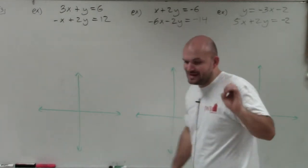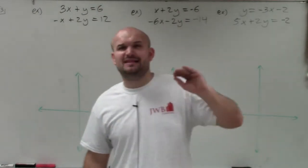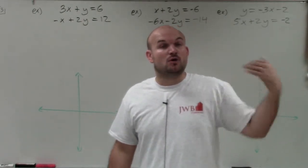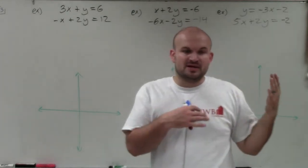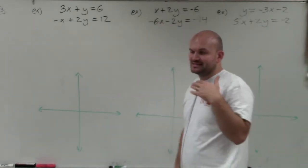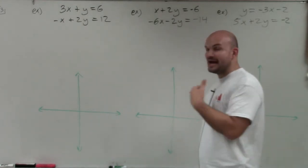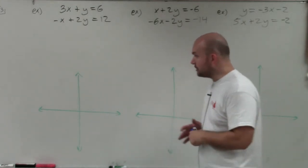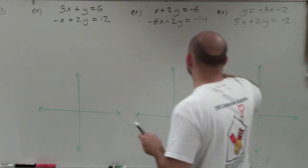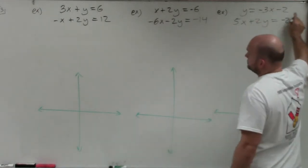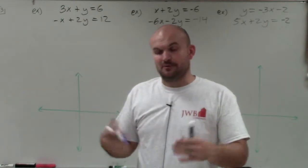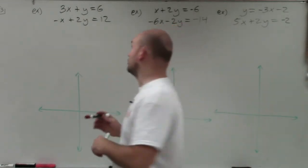Since we're trying to find the x and y-coordinates, when you're graphing I highly recommend that you use slope-intercept form — y equals mx plus b — to graph, rather than using the intercept method where you just find the x and y-intercept and connect them. That method is not as beneficial in this example as using slope-intercept form. So the first step is to convert our equations to slope-intercept form.